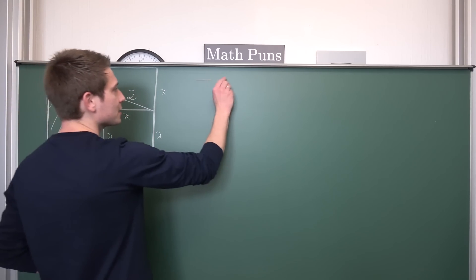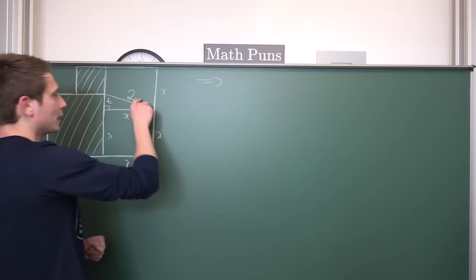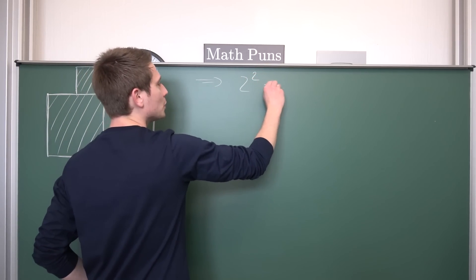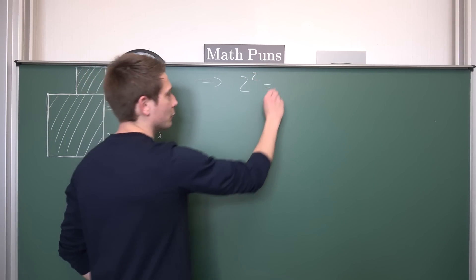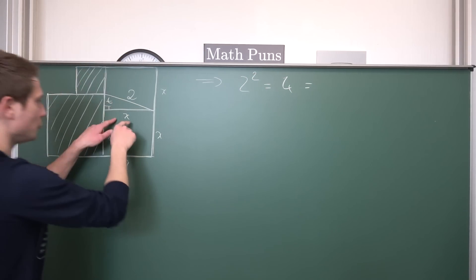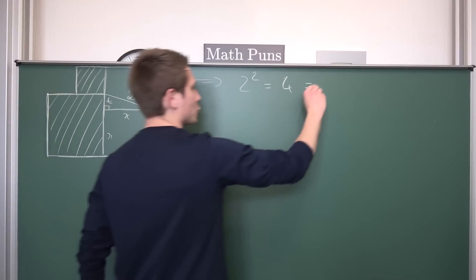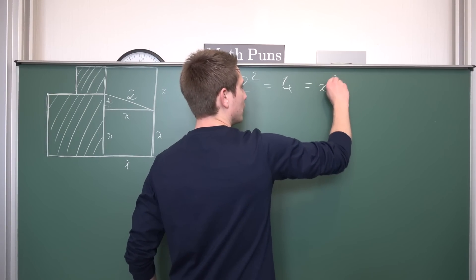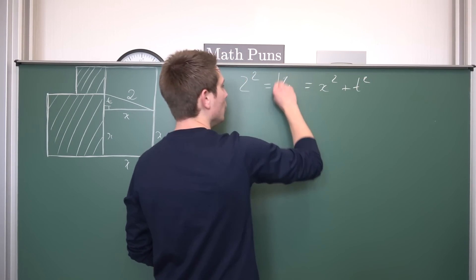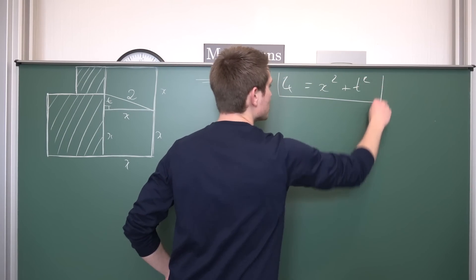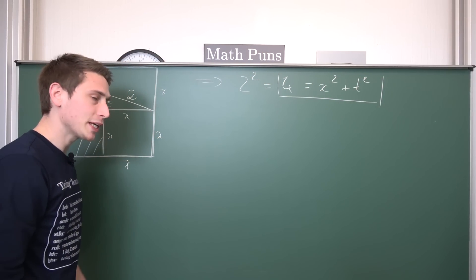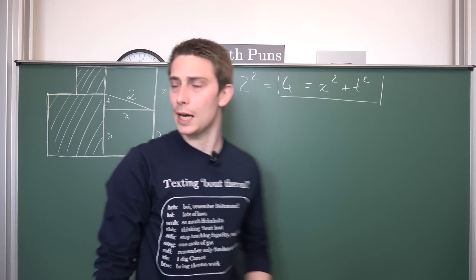Papa Pythagoras tells us in this right triangle that 2 squared — which is nothing other than 4 — is equal to x squared plus t squared. This is our first equation.